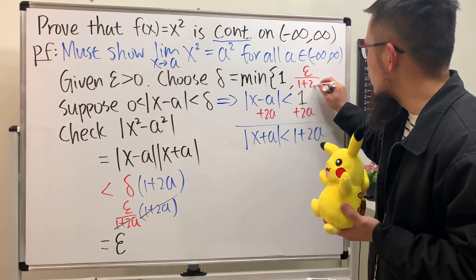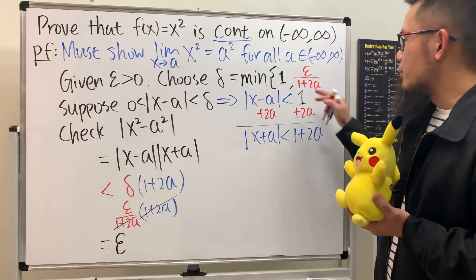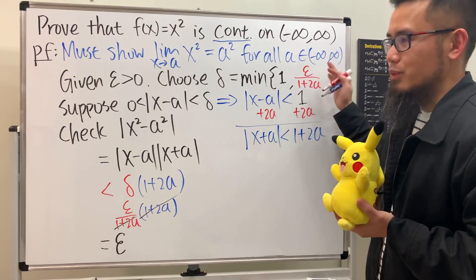Epsilon over 1 plus 2a, and because we have the 1 plus right here, so you don't need to worry about if a is 0 or not, whatever.